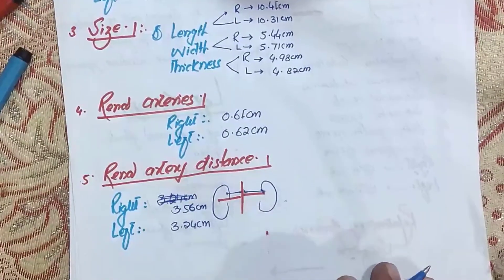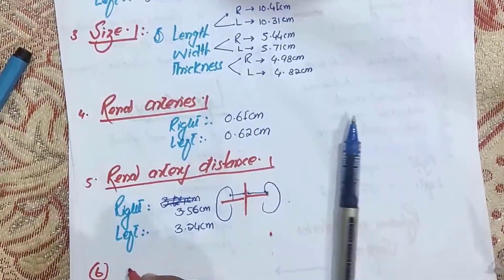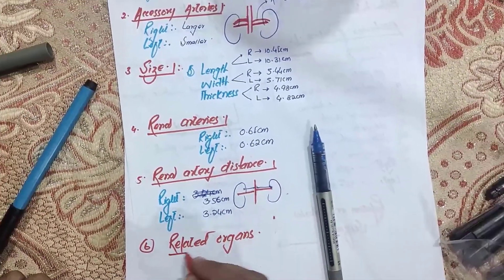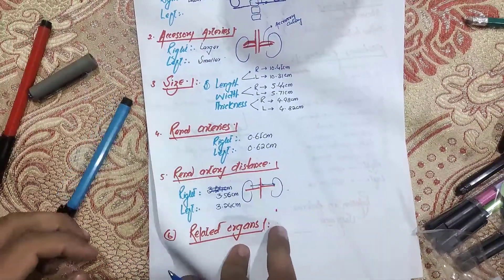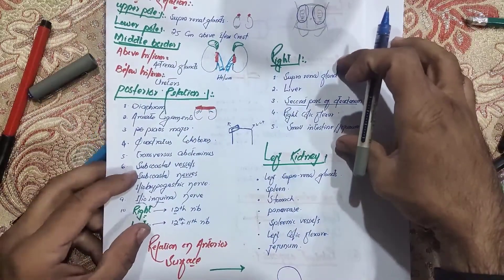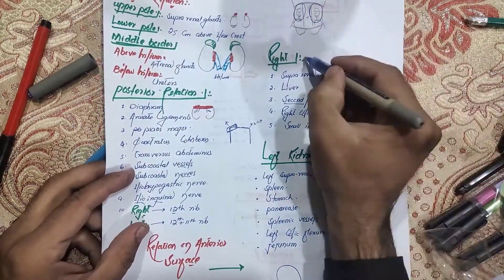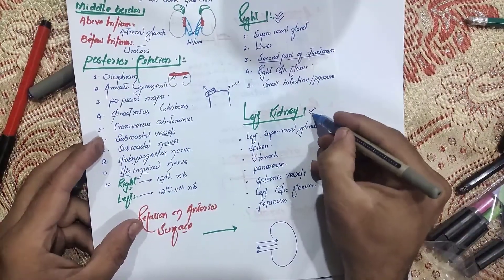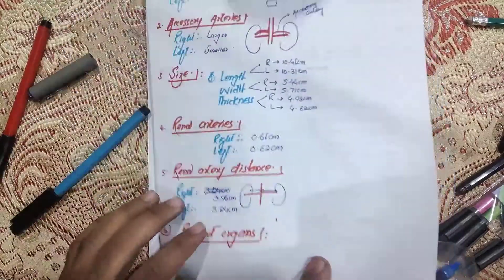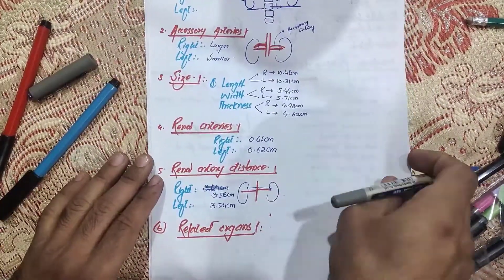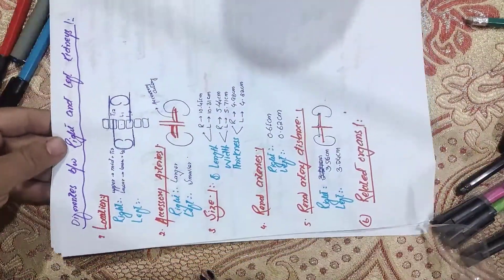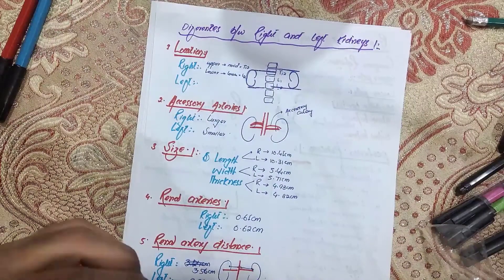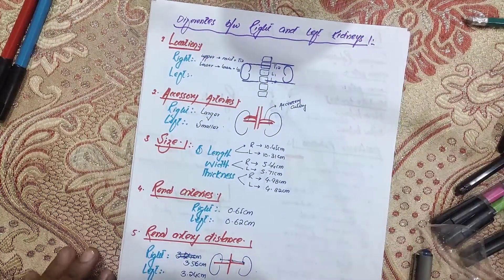The last difference is in the related organs. The organs present on the anterior surface of the right kidney are different from those on the anterior surface of the left kidney — this was already discussed in the previous lecture. So these are the differences between the right and left kidneys. You can take a picture and make notes. See you in the next lecture. Allah Hafiz.